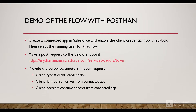Now let's talk about the demo. We'll create a connected app in Salesforce and enable the client credential flow checkbox, then select the running user for that flow. We'll make a POST request to the endpoint: mydomain.my.salesforce.com/services/oauth2/token, providing grant type equals client_credentials, client ID, and client secret. Note that the running user needs the API only permission, which is not available in the developer edition org. I have an enterprise edition org that we are going to use for this demo.